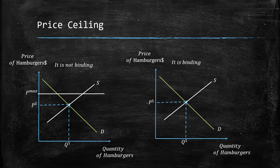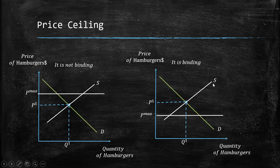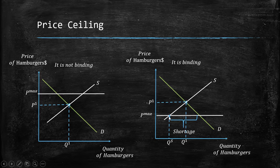On the other side we have the case where the price ceiling is binding — it changes the quantity and the price in the market. The maximum price is set below the equilibrium, meaning suppliers cannot charge more than this price. In this case there is a difference called a shortage, because QS is the quantity suppliers can supply, but at this lower price the quantity demanded is higher.